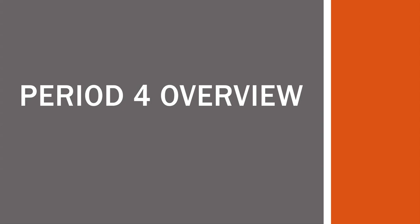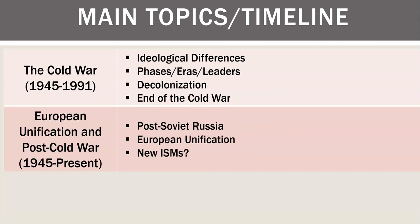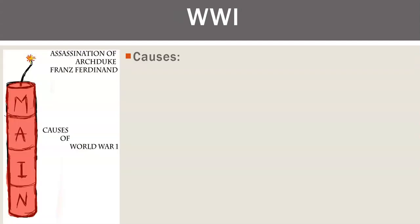Here's our Period 4 overview in AP European History — basically 1900 to the present. Here are the topics we're going to be going over. You don't need to write any of this stuff down.